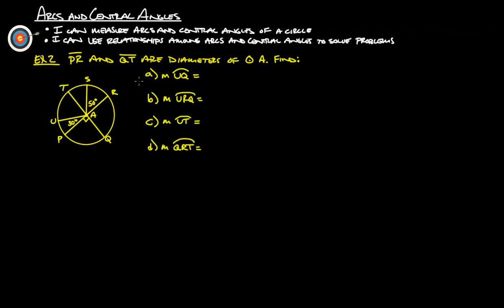Here we go. Example two. PR and QT are diameters of circle A. So PR and QT, these are both diameters. So all these are radii. Find the measure of all these different angle measures. So let's do this. Let's do the same thing we did before. I'm just going to go through and figure out what all of these angle measures are. If this is 90, we know that this over here is 90. Because these two add together to 180, that's 30. We know that this is going to make a 90 degree angle here too. So 30 and 60 give us 90. And 50 and 40 give us 90. So that should be all the measures of all those central angles.